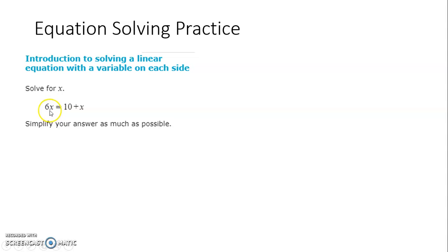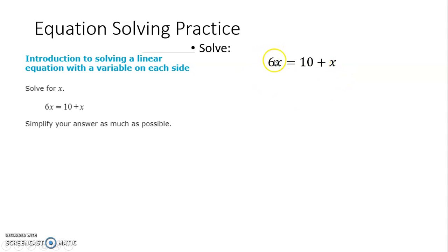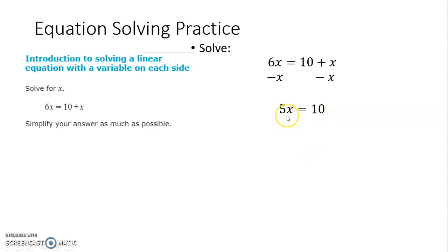Alright, let's do one more. You'll notice it's very similar — we've got x's in two different places, but this time we have 6x on the left and an x on the right-hand side. We need to combine these like terms across the equal sign. So we'll subtract x on both sides. This positive x and negative x will cancel, and then we have 6x minus x on this side, which is 5x. So we have 5x equals 10. We divide both sides by 5, and we get 10 over 5. That's just 2.